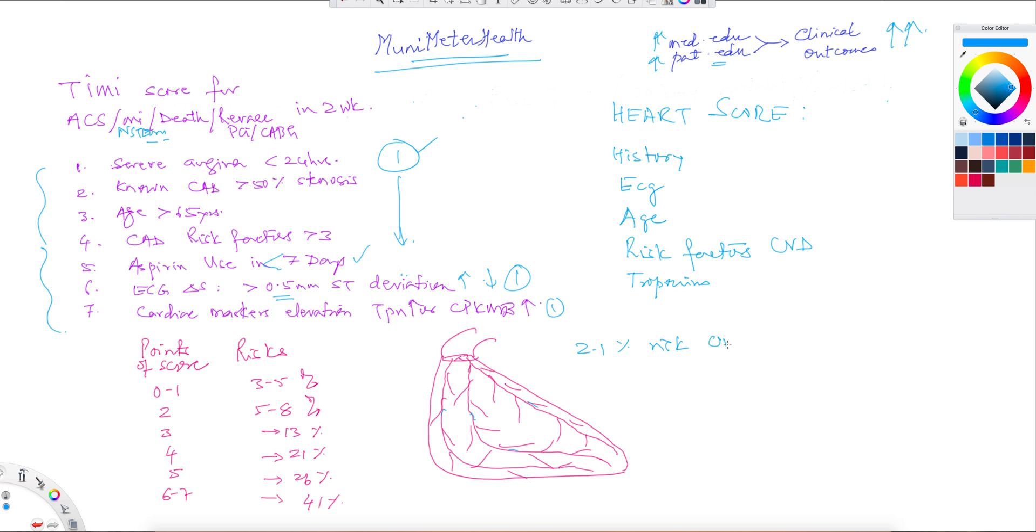Your risk could be 2.1 percent if the score is zero. As you approach a point score of one, the risk increases to five percent and so on. By the time you reach the score of six to seven, the risk could be as high as 41 percent at the end of two weeks.